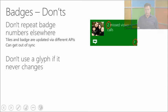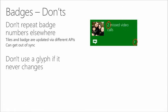What you shouldn't do with badges: don't show a badge and the same information in the tile text — for example, showing 'two missed video calls' in the tile and also a badge saying two. That's too much duplicate information. Use either the badge or the text. And don't use a glyph if it never changes — make it a live experience for the user.